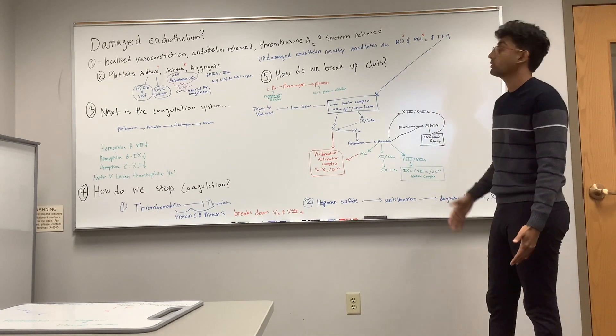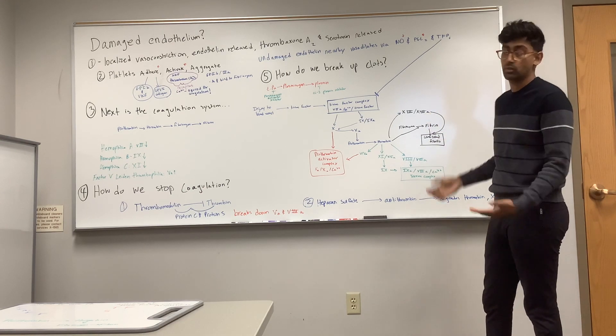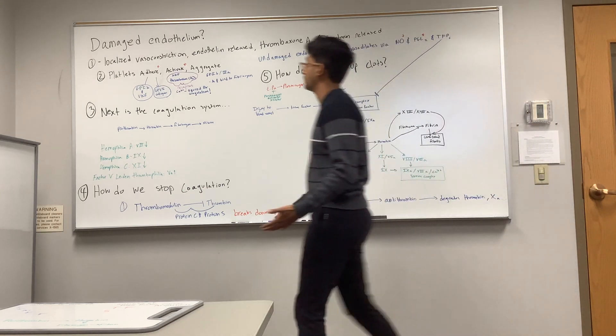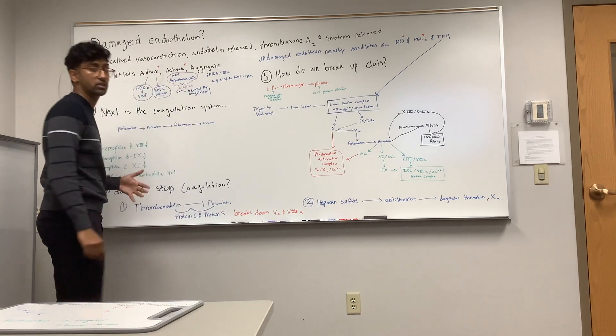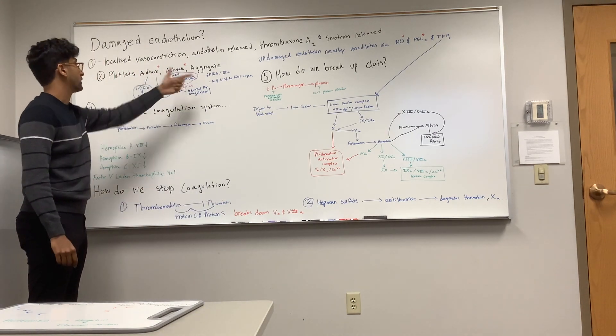Going back to our damaged tissue, once it releases thromboxane A2 and serotonin and vasoconstricts, we can move on to the platelets. The platelets are megakaryocyte fragments, and they're going to adhere, activate, and aggregate.